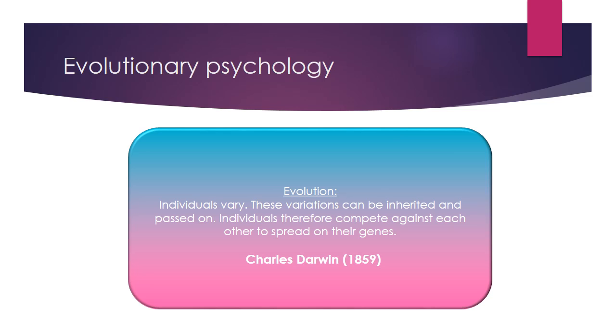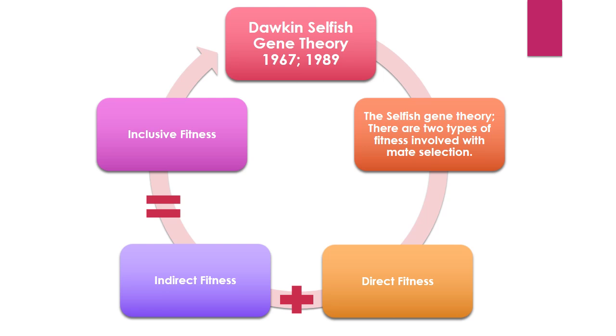Richard Dawkins (1967) states that survival is at a genetic level and that our purpose is to pass on our genes. He proposed the selfish gene theory.